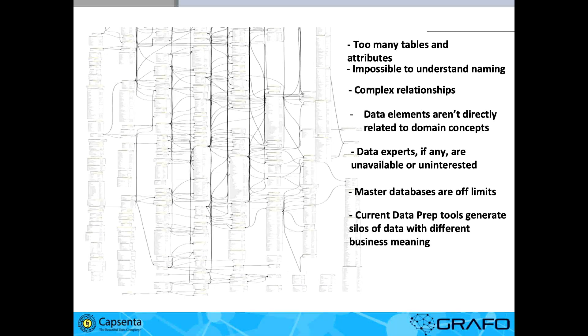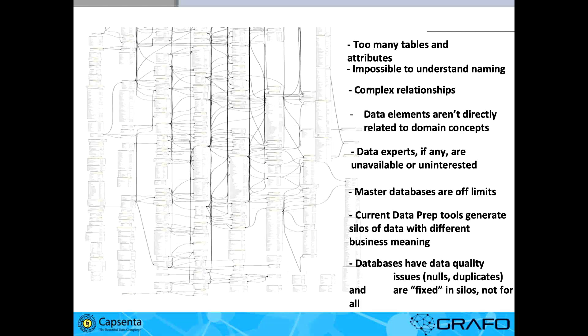Then everybody starts defining what a large order is. Somebody said it was 15 orders, somebody said it was 20 orders, and we start getting this difference. Databases also have a bunch of quality issues — nulls, duplicates. How do we fix this stuff?